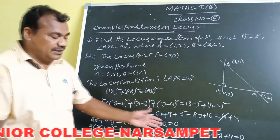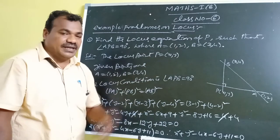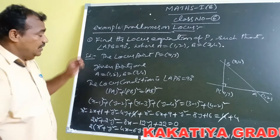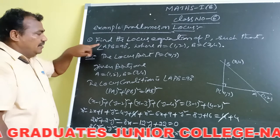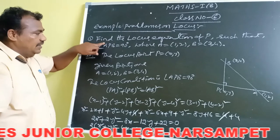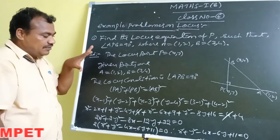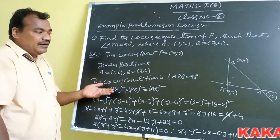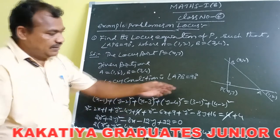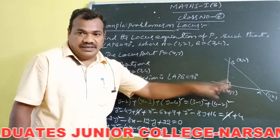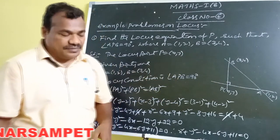So this is our required locus equation of P, such that the line segment AB subtends a right angle at point P. We observe that for angle APB equal to 90 degrees, the line segment AB subtends a right angle at P, meaning we apply the right angle triangle condition — that is, the Pythagoras condition: the sum of squares of the two sides (adjacent and opposite) is equal to the square of the hypotenuse.